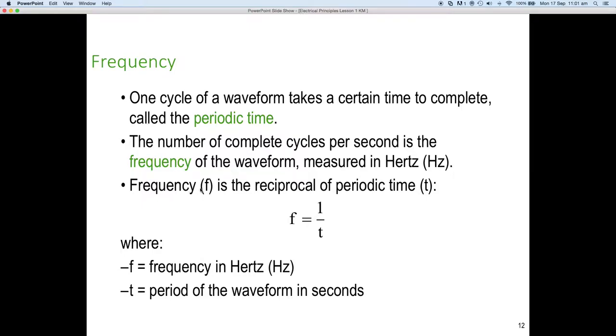So frequency we use the lower case f. Is the periodic time and we use lower case t for time. So the formula you need to understand is frequency equals one, the one stands for one second, divided by the time, because the time is normally in fractions of a second. So take a moment now to quickly get out Ken's equation sheet and have a look and make sure you can find the formula.